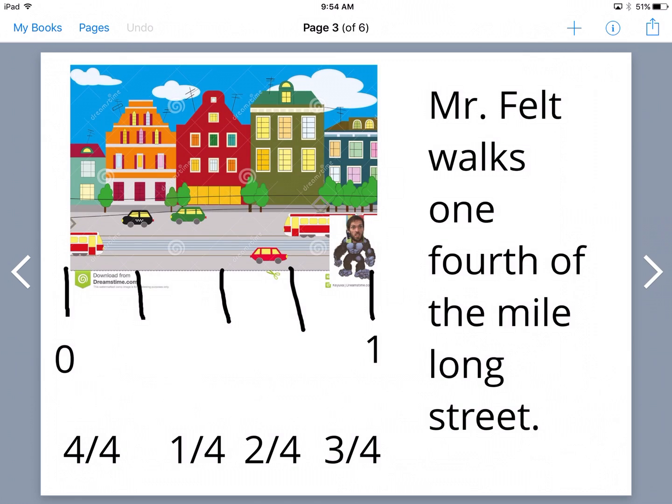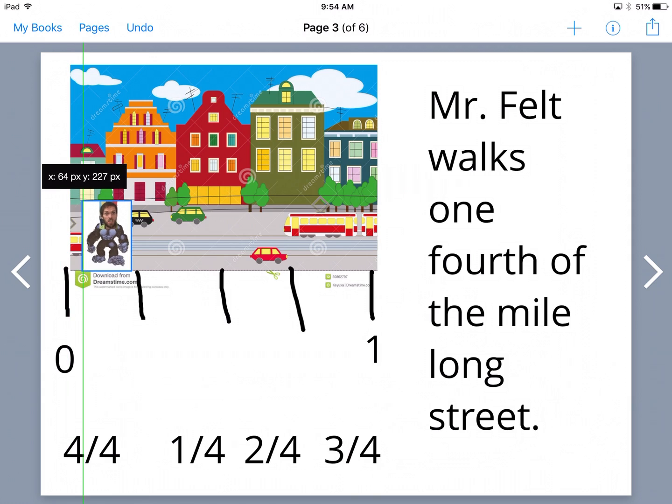And then I have them break the street into fourths. So what if Mr. Felt walked one-fourth of a mile? The screen says Mr. Felt walks one-fourth of a mile long street. So he goes right here, and then I have them pull the one-fourth over.